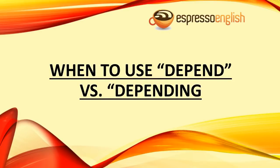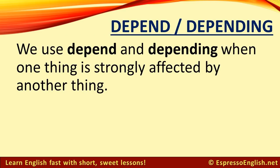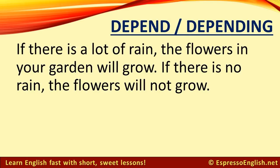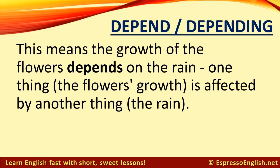When to use depend vs. depending, from Espressoenglish.net. We use depend and depending when one thing is strongly affected by another thing. For example, if there is a lot of rain, the flowers in your garden will grow. If there is no rain, the flowers will not grow. This means the growth of the flowers depends on the rain.